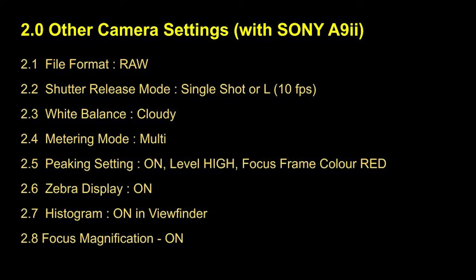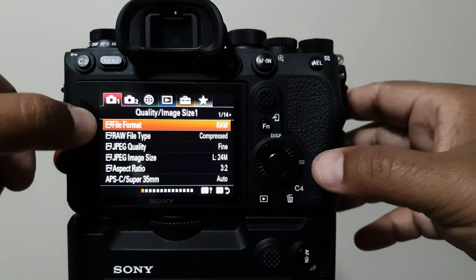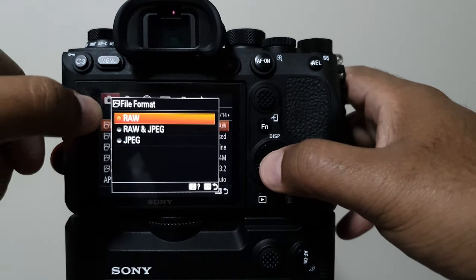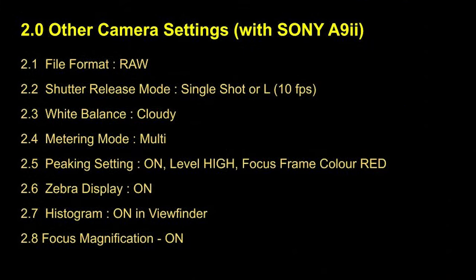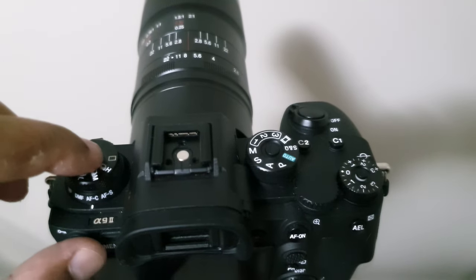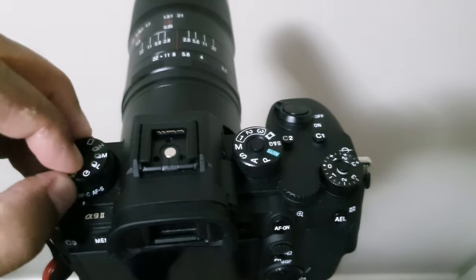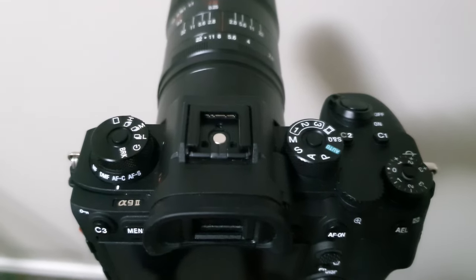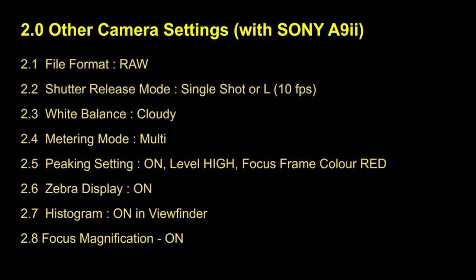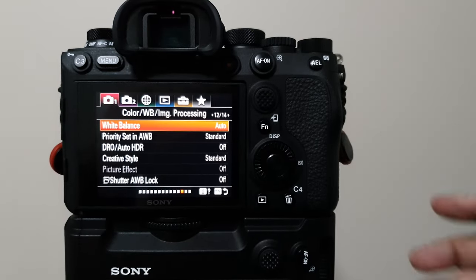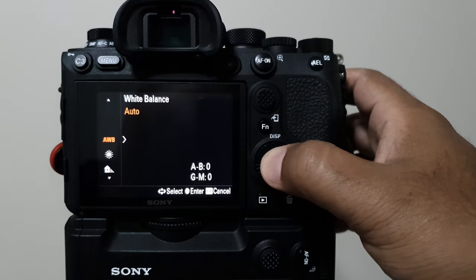Camera mode is one of the top settings related to macro photography. I shoot RAW file format instead of JPEG so you can easily post-process your image. For macro photography I use single shot or mode L, which means 10 frames per second, as the shutter release mode. White balance — most of the time I set it to cloudy mode, and on some occasions I use Kelvin 5500.